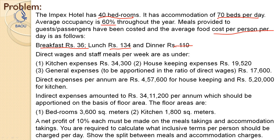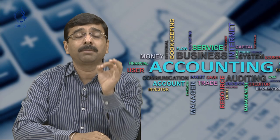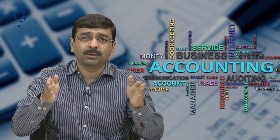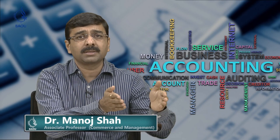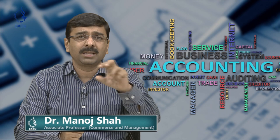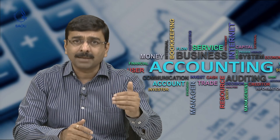The next part of the question: direct wages and staff meals per week — kitchen expenses are given as 34,300 rupees, which is purely concerned with the meals requirement. Housekeeping expenses is given as 19,520 rupees, which will be provided for the accommodation part. General expenses to be apportioned in the ratio of direct wages: 17,600 rupees. Certain expenditures are already bifurcated between the two different services — one for accommodation expenses and the second for meals expenses.